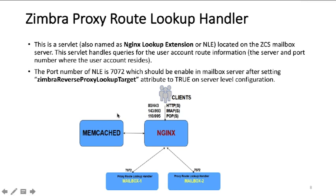This servlet handles queries for user account route information, such as the server and port number where the user account resides. The port number of NLE is 7072, which should be enabled on the mailbox server after setting the Zimbra reverse proxy lookup target attribute to true at the server level configuration. The client connects to Zimbra Proxy on port 80 or 443 for HTTP requests, or via IMAP or POP. Nginx looks up Memcached for cached information; if not found, it queries NLE and stores the result in Memcached for future use.